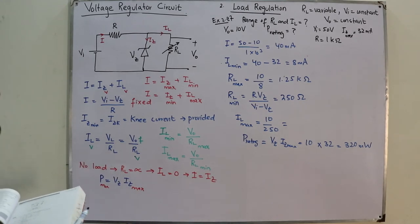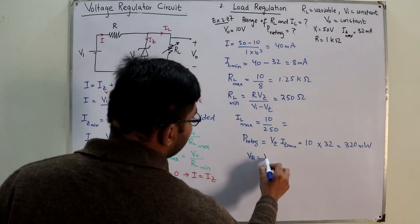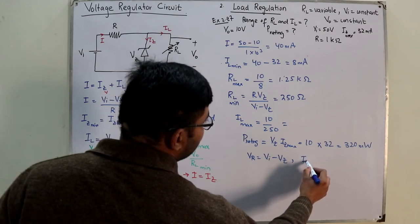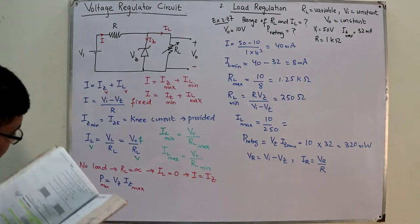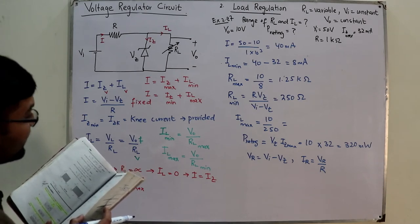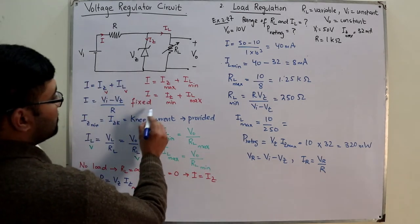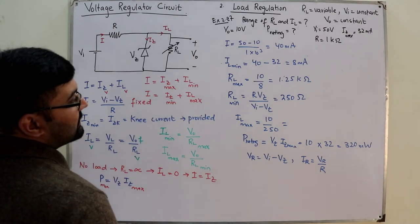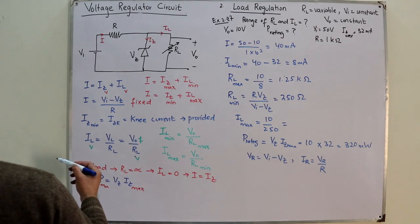You can also find IR = VR / R, where VR = VI − VZ = 50 − 10 = 40 V, giving IR = 40 mA. ILmin can be verified as I − IZmax. RLmax equals VZ divided by ILmin.